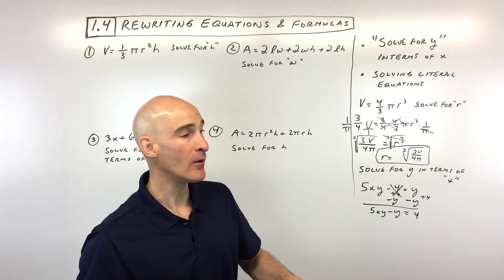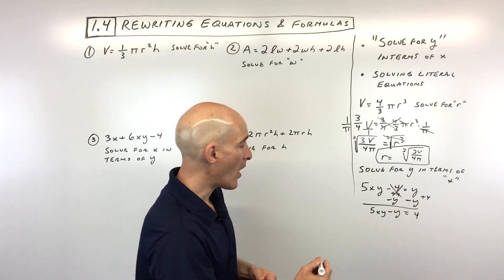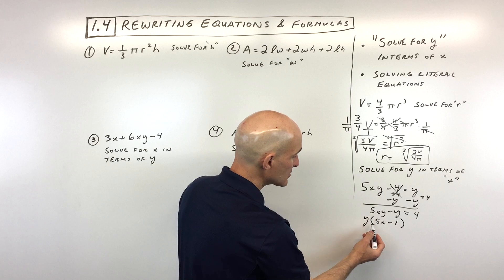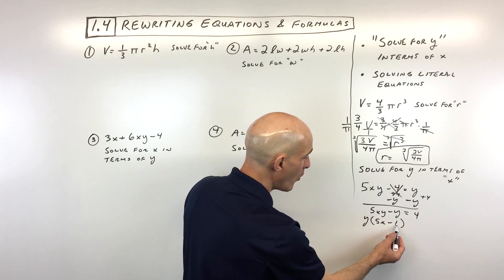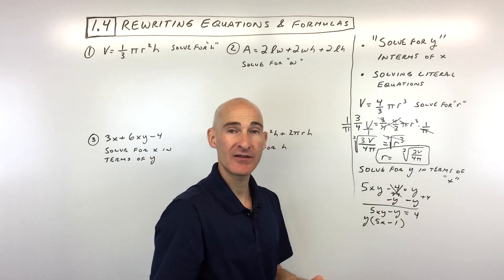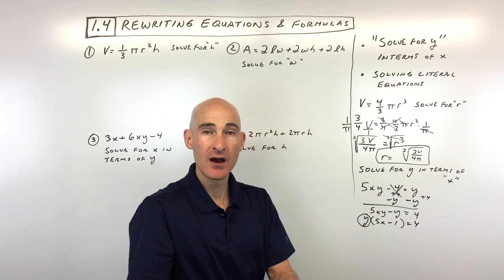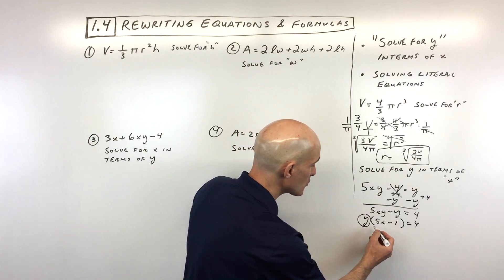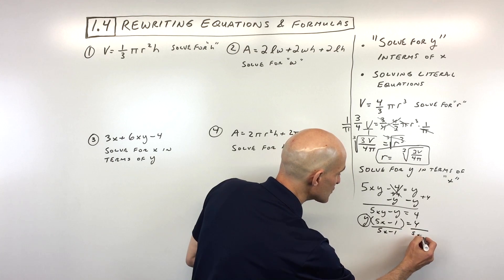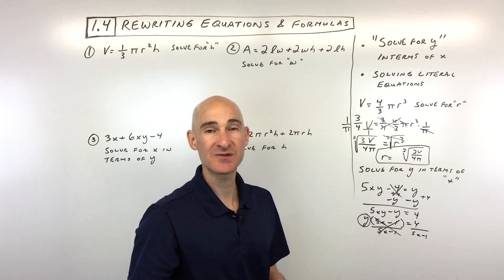Now we have 5xy minus y on the left and 4 on the right. Since there's a y in both terms on the left, we factor out the y — like the distributive property in reverse — leaving y times (5x minus 1). You can verify by distributing y back in. To get y by itself, we divide both sides by (5x minus 1), those terms cancel, and the final answer is y equals 4 divided by (5x minus 1).